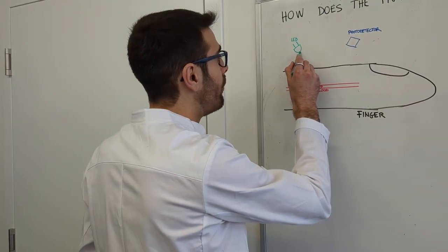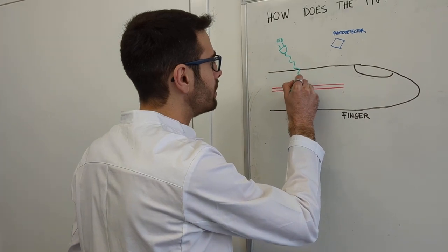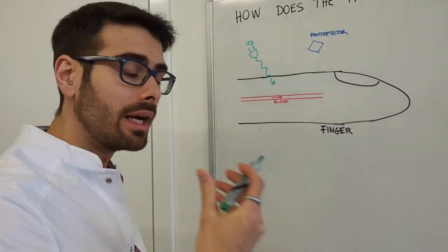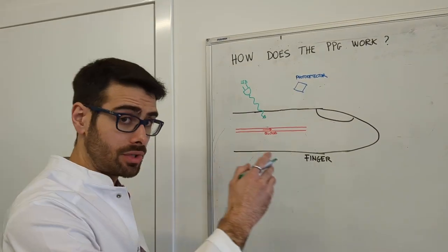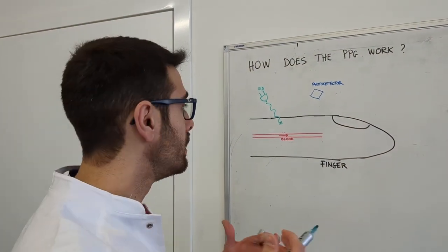The light, the photons, which are actually the particles carrying the light, will be interacting with the skin. In this case, the finger, since we're talking about the ring device.